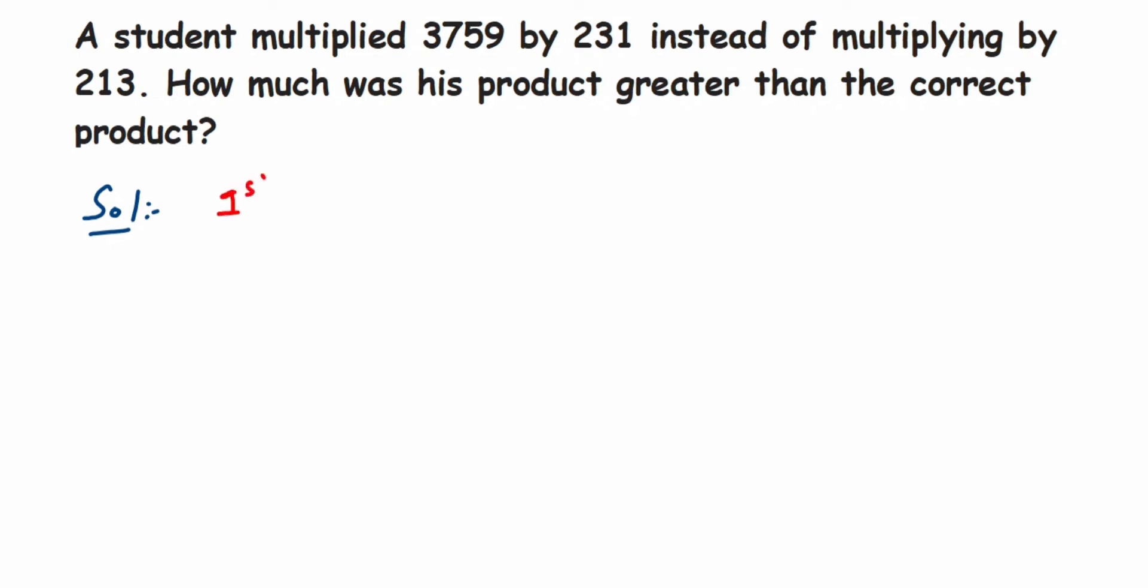The first method is quite lengthy. What we have to do is find the difference, right? They're asking how much greater, so we have to subtract. We have to multiply this number and again 3759 by 213 and then do it. Instead of doing it separately, I'm going to do it in one single step.